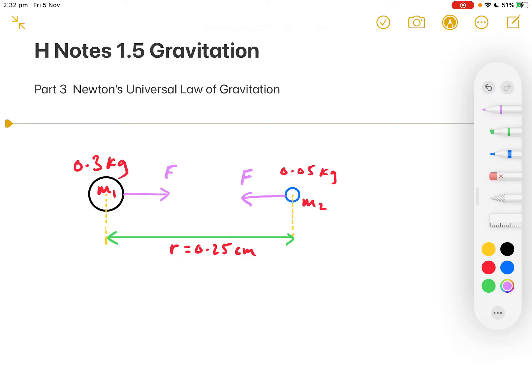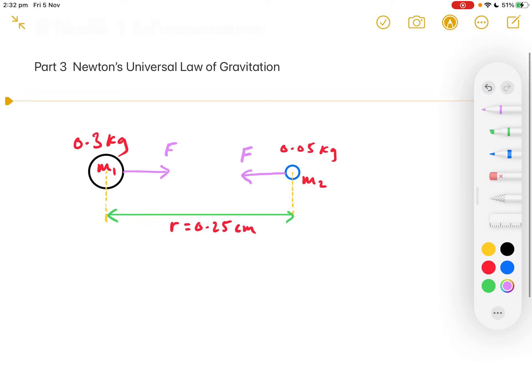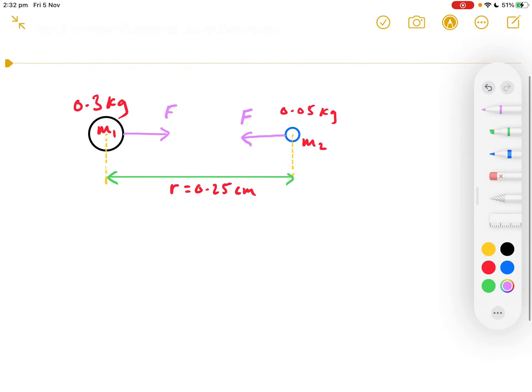Notice, of course, that the force on M2 is acting in our diagram to the left, whereas the force on M1 is acting to the right. So, they've got different directions and they're acting on different bodies, but they have the same magnitude.